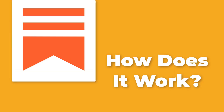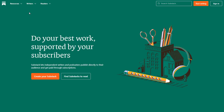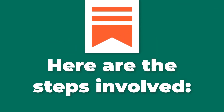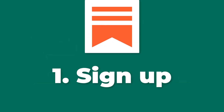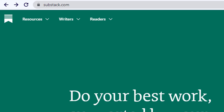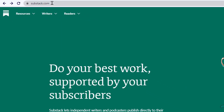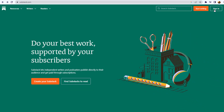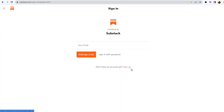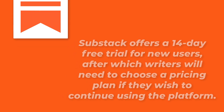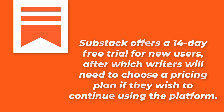Next, how does it work? Substack allows writers to create and distribute their newsletters to their subscribers. Here are the steps involved. Number 1: Sign up. To sign up for Substack, writers simply need to go to the Substack website and create an account using their email address. Substack offers a 14-day free trial for new users, after which writers will need to choose a pricing plan if they wish to continue using the platform.